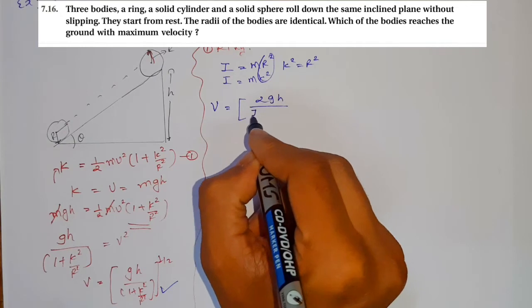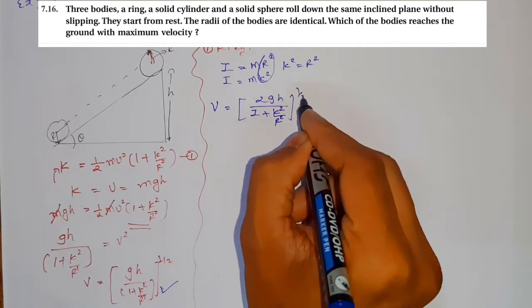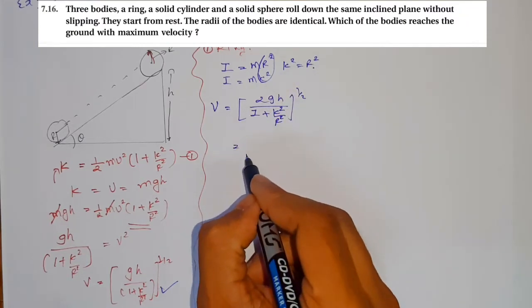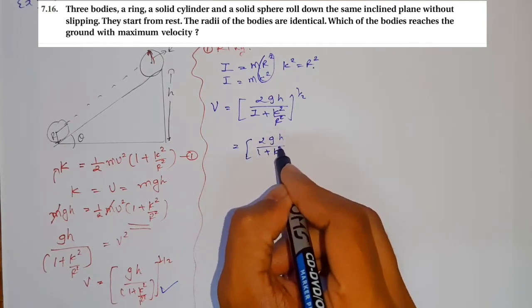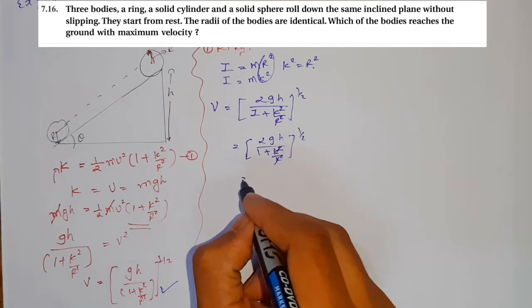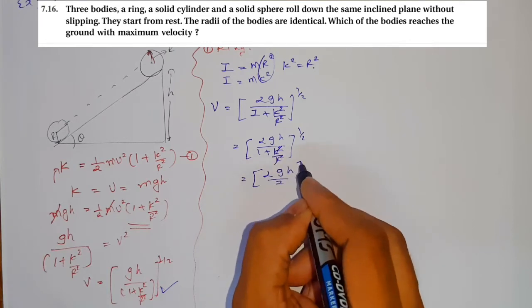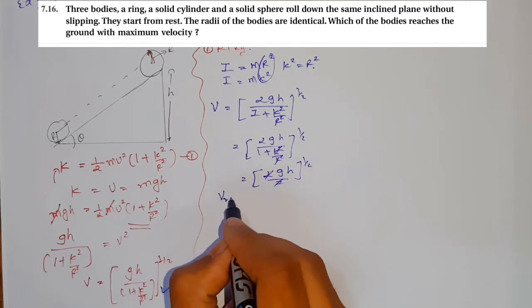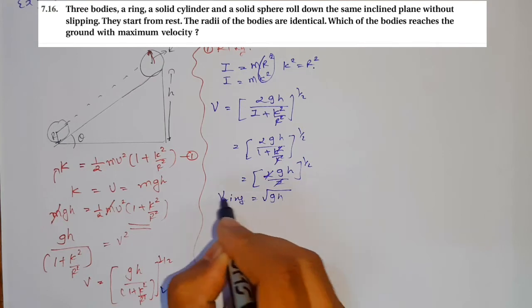For the ring, using the formula v = √(2gh / (1 + k²/r²)), we substitute k² = r². So we get v = √(2gh / (1 + r²/r²)) = √(2gh / 2). The r² terms cancel, giving v_ring = √(gh).